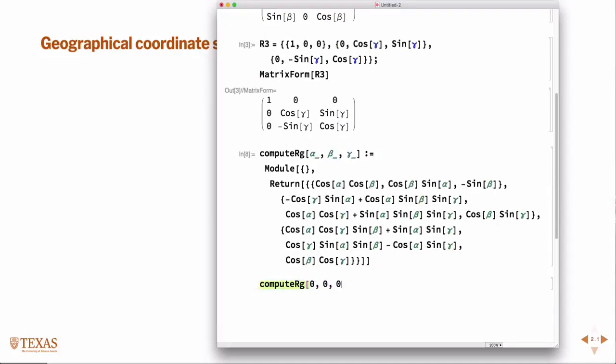What if all three angles are zero, what should I get? The identity matrix. I do.